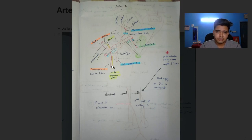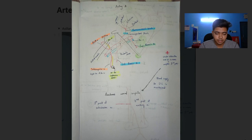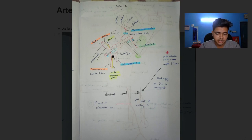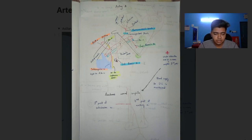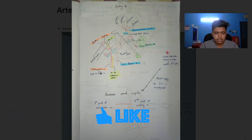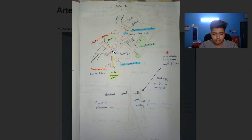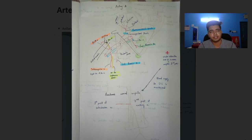The largest branch of the axillary artery is the subscapular artery, which supplies the scapular region. The nerve to latissimus dorsi runs along the subscapular artery, and the axillary nerve runs along the posterior circumflex humeral artery.